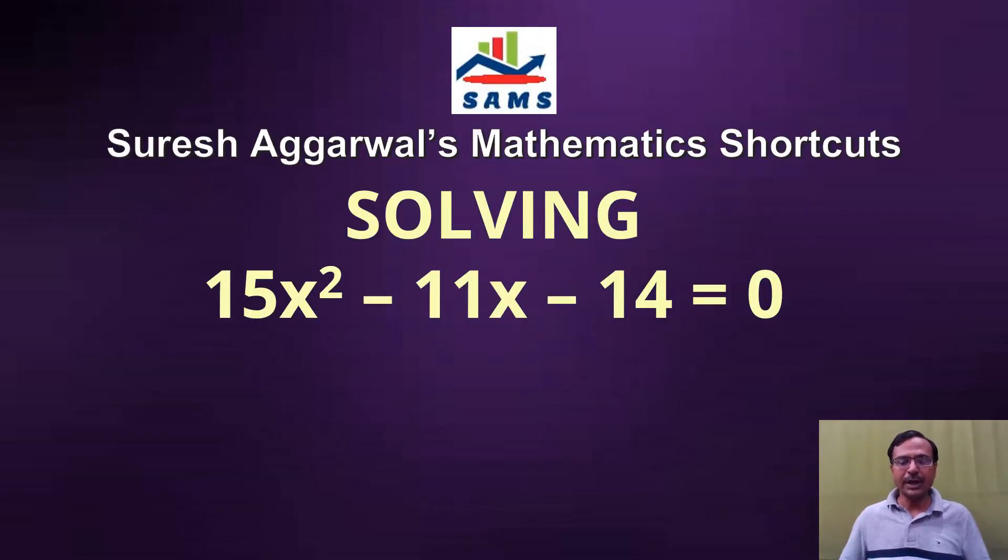So in this video I am going to take up an equation here you can see 15x² minus 11x minus 14 equal to 0. The coefficients are above 10 and whenever the coefficients are above 10, the students face a problem in splitting the middle term and finding those factors into which the middle term has to be broken down.